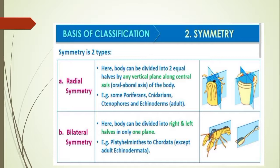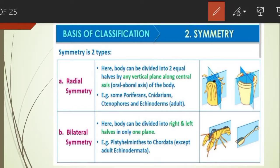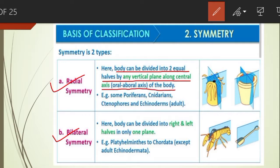Symmetry can be further divided into radial symmetry and bilateral symmetry. When any plane passes through the central axis of the body and divides the organism into two identical halves, it is called radial symmetry. Examples: Cnidarians, Ctenophores, and Echinoderms. The body can be divided into two equal halves by any vertical plane along the central axis.